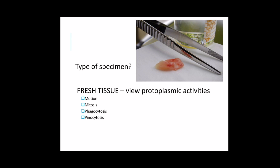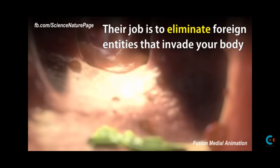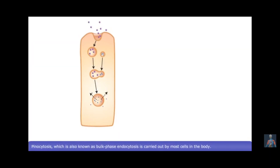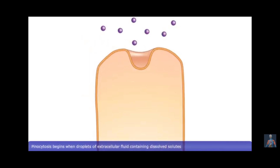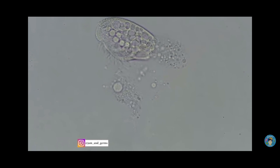Examination may be done on fresh or preserved tissues depending upon necessity. Fresh tissues have the advantage of being examined in the living state, thereby allowing protoplasmic activity such as motion, mitosis, phagocytosis, and pinocytosis to be observed. Its use has been limited, however, because tissues examined in a fresh state are not permanent and are liable to develop changes typically observed after death.